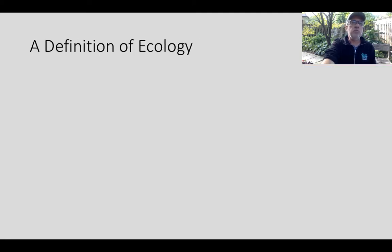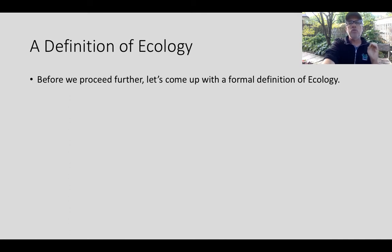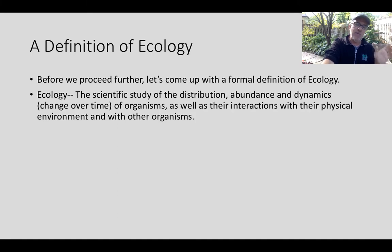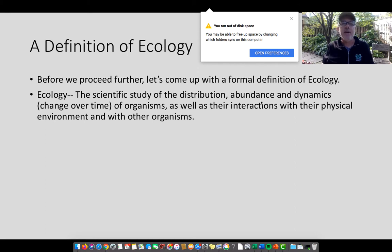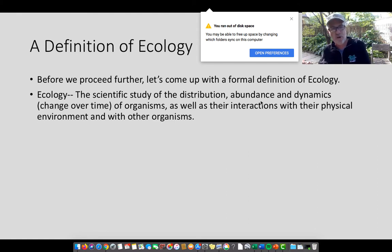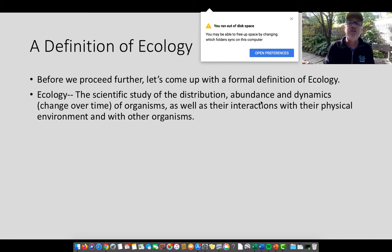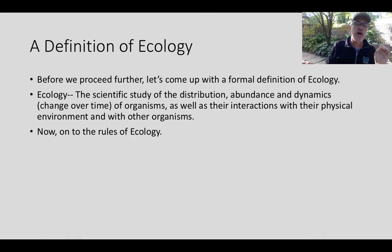Before we move on to the rules, it's important to come up with a formal definition of ecology. I got this one from the British Ecological Society and modified it slightly: Ecology is the scientific study of the distribution, the abundance, and dynamics — which is the change over time — of organisms, as well as their interactions with their living environment (in other words, with other organisms) and their physical environment. The study of where they occur, how many there are, how they change over time, and how they interact. So now we're going to go on to the rules of ecology in video number two.